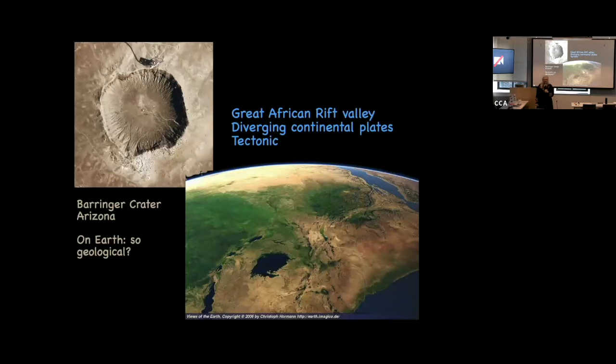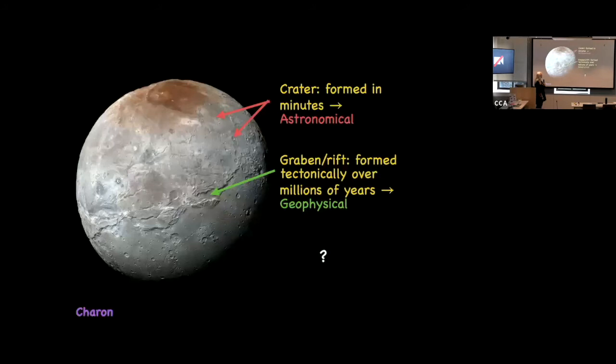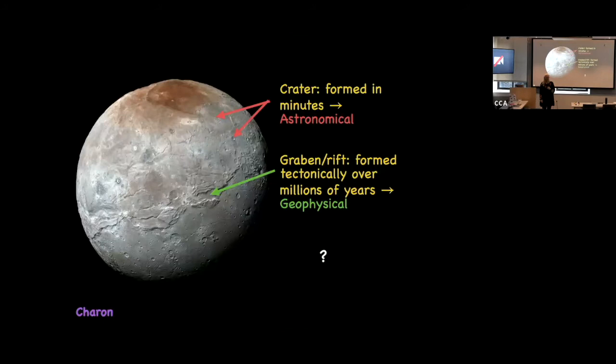When we see something in space we automatically assume it happened instantaneously with an impact, but when we look at something like a rift valley we think of it as a geological process. The New Horizons mission returned this lovely image of Charon — it has craters and big rift valleys. Most explanations for them are geological, meaning they took lots of time. But why does it have to be? Maybe it happened quickly.